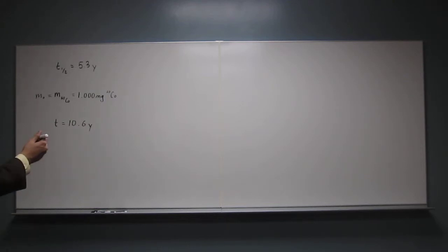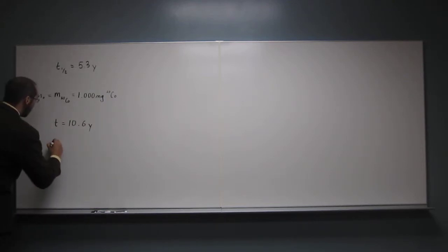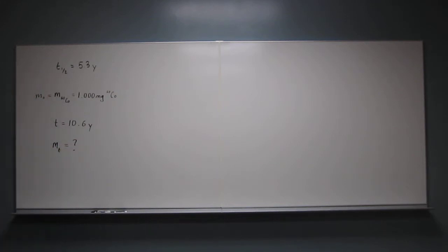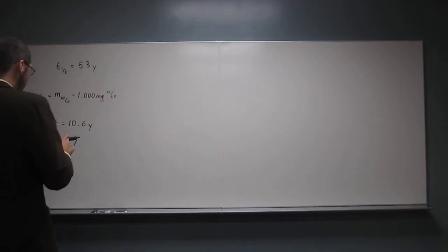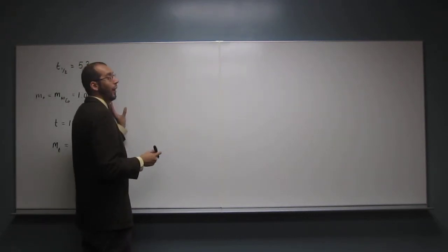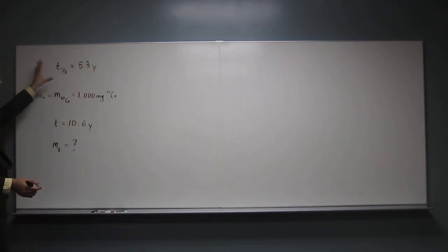Remember, what are we looking for? We're still looking for the mass at time t. But in this case, we're just going to use the fact that we know the half-life already. So the first thing we're going to have to do is figure out how many half-lives have passed from time 0 to time t.